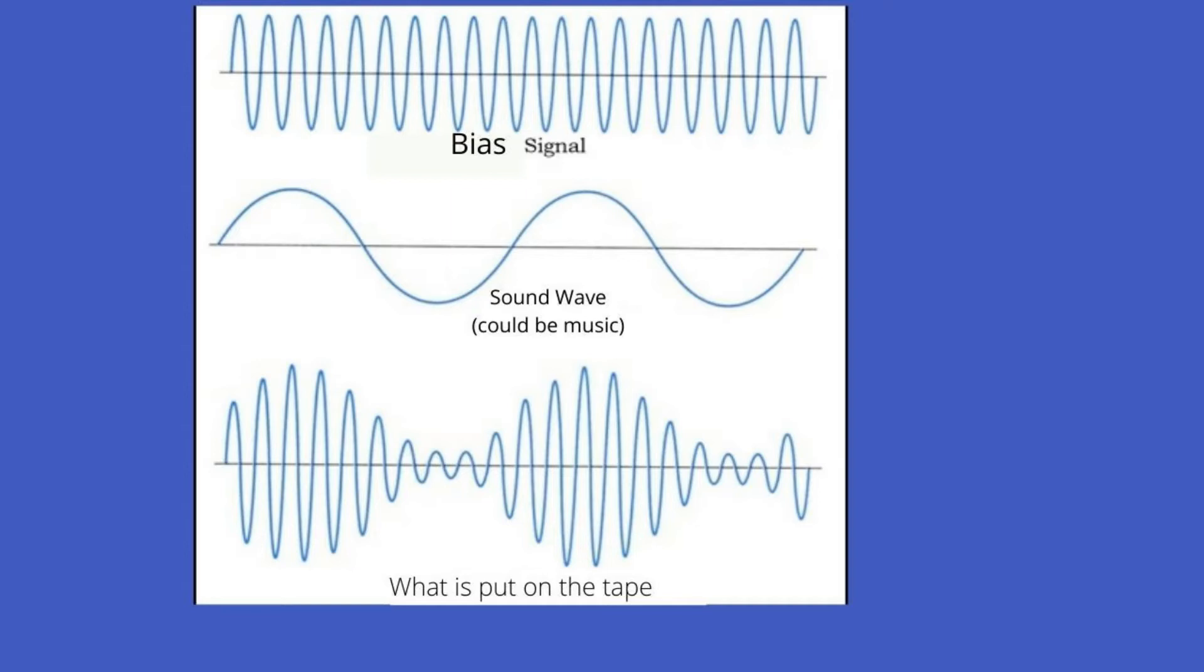So CRO2, Chrome, they're high bias tapes and you have to put a bit more push behind it. That's all it is. Don't get confused. But it is important that you use the right bias for the right tape. If you use the wrong bias it will sound awful.